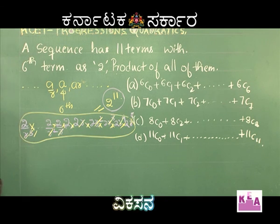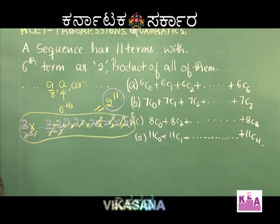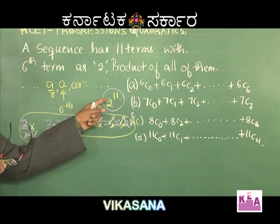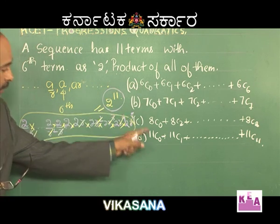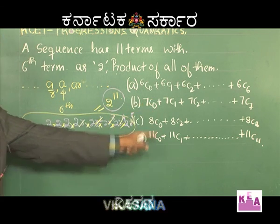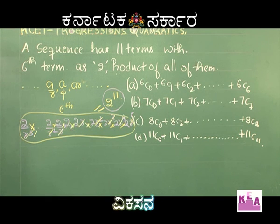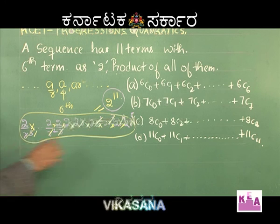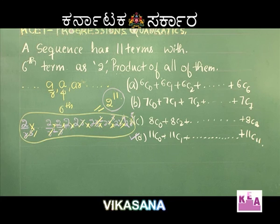We just established that nC0 + nC1 + ... + nCn = 2^n. So 2^11 equals 11C0 + 11C1 + 11C2 + ... + 11C11. That clearly shows option D is correct. See how simple it is!